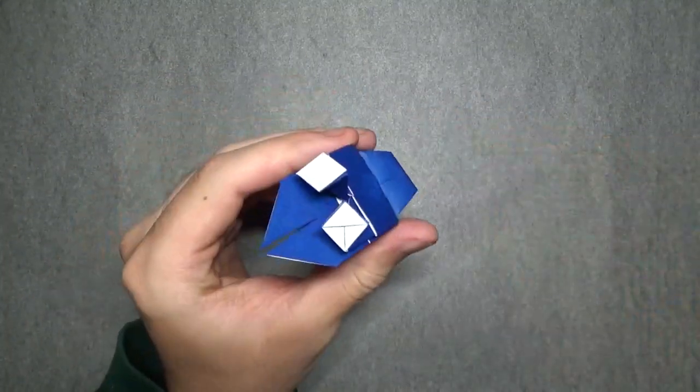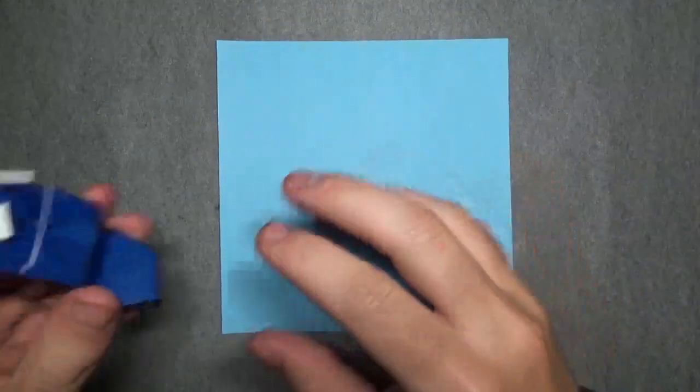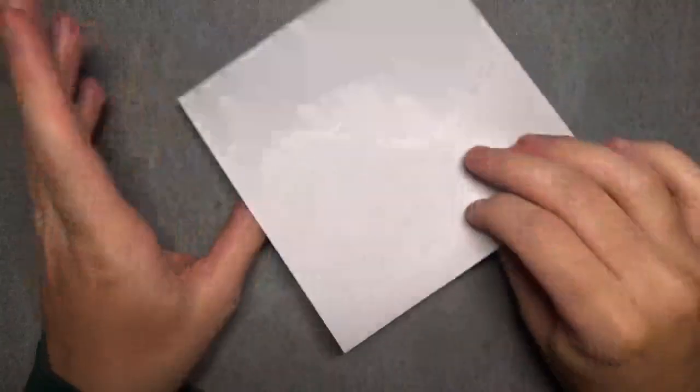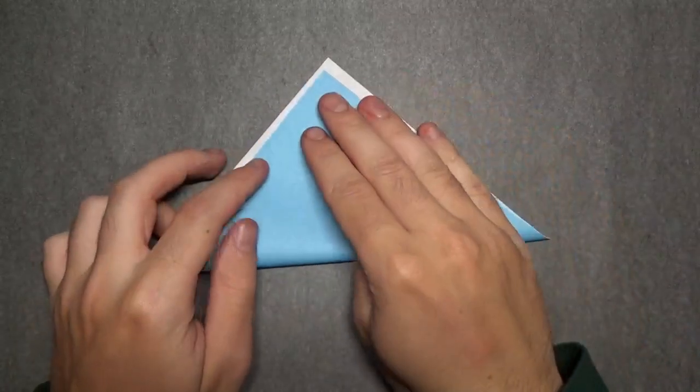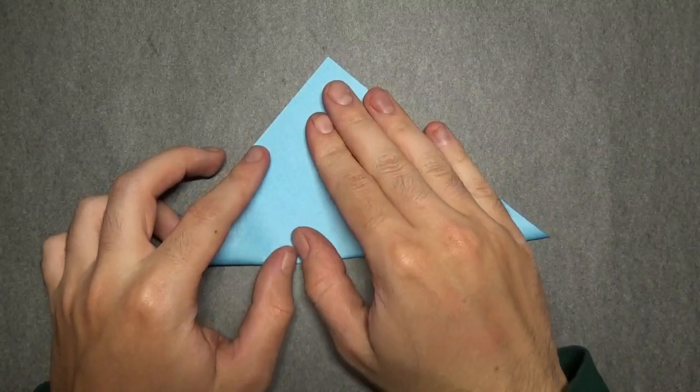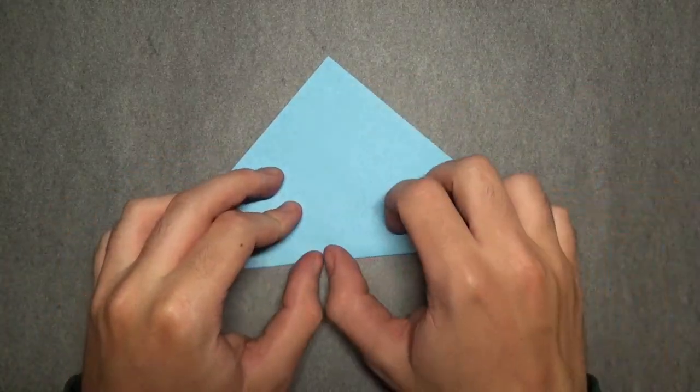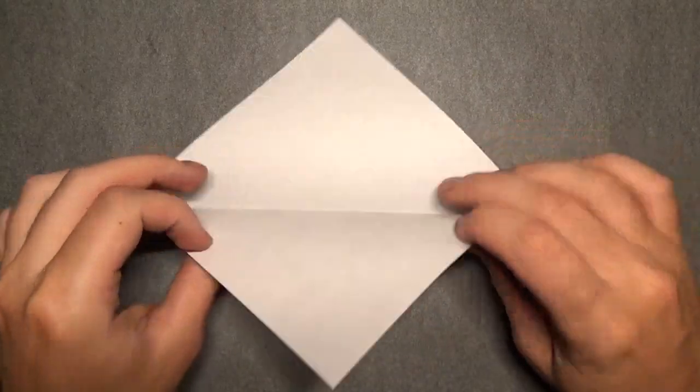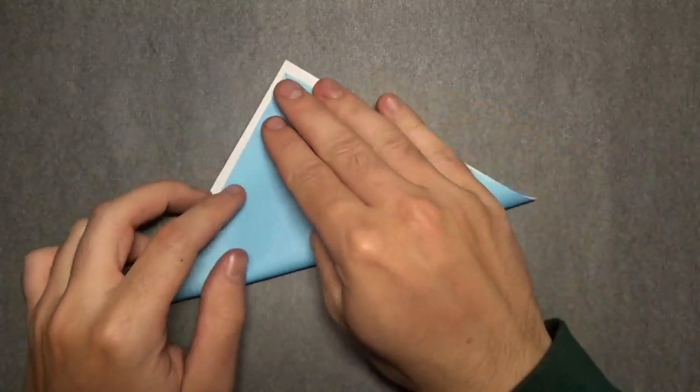Okay, so for this model, I'm going to use a 1x6 square of Kami. So, begin right side up, and let's fold in half. We're making a water bomb base. And fold in half this way.